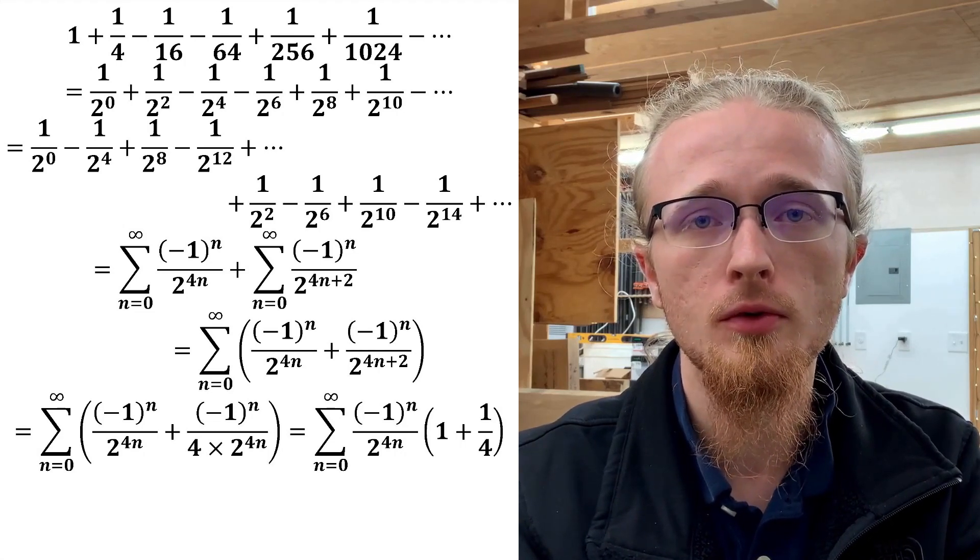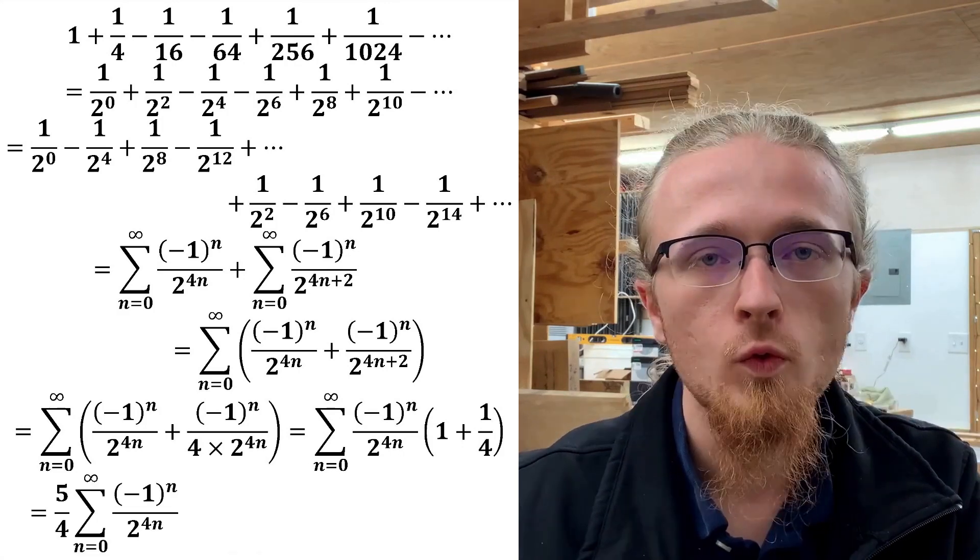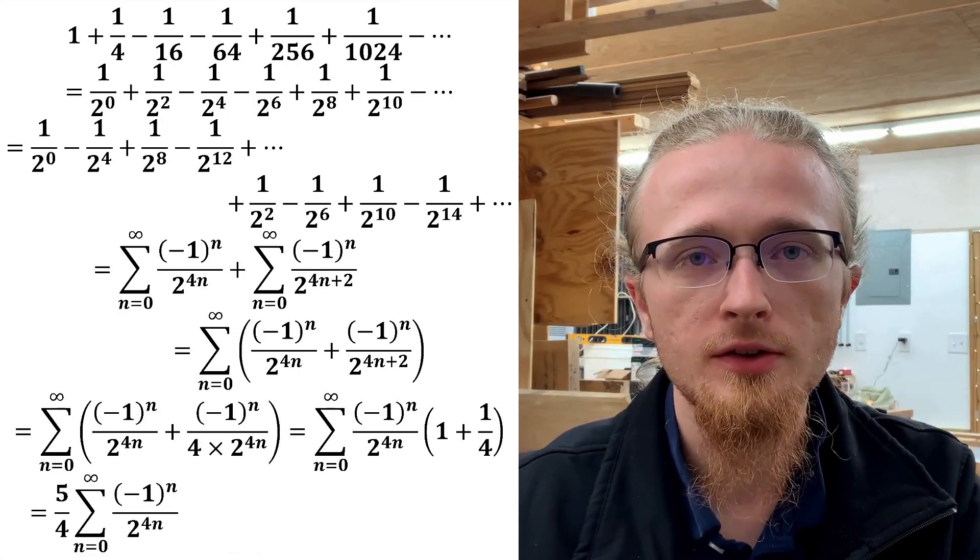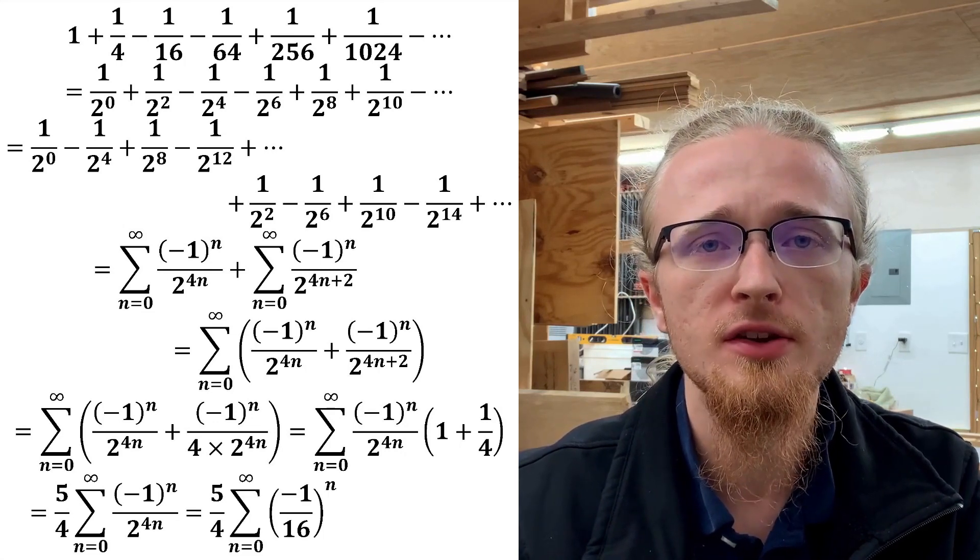This then allows us to factor out the minus 1 to the n over 2 to the 4n factor from the whole thing, leaving us with an overall factor in front of the series of 5 fourths. We can then write what's left under the sum as negative 1 over 16 all raised to the nth power.